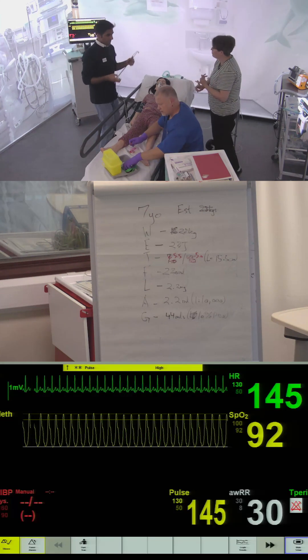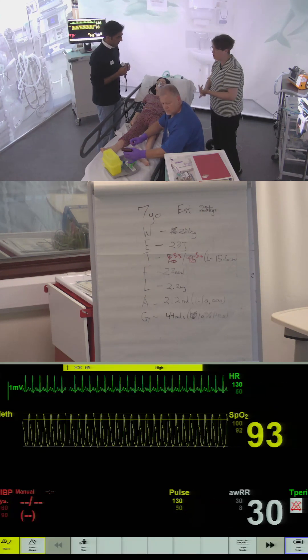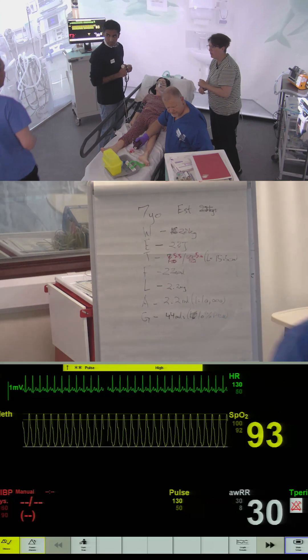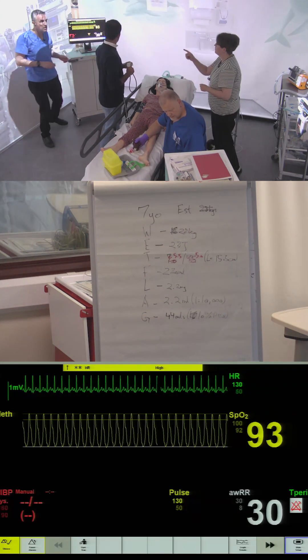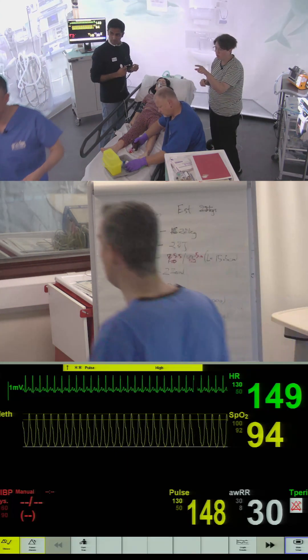She needs a fluid bolus of 10ml per kilo, which is 220ml as soon as we've got IO and she needs some glucose. So, can you first get the glucose?